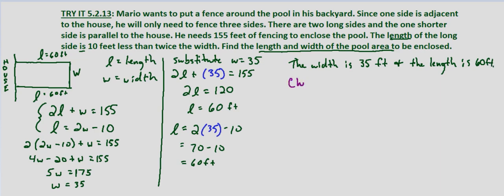So let's check by substituting into both equations. So 2L plus W, two lengths and a width we know is 155 feet. So does 2 times 60 plus 35 equal 155? So that's 120 plus 35. Does that equal 155? And it indeed does 155 equals 155. So our solutions check in our first equation.